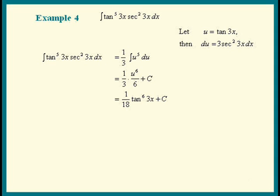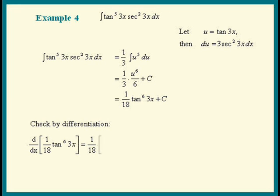Let's check by differentiation. The power rule for differentiation says, pull down the power, subtract 1 from the power, then differentiate whatever is raised to the power. In this case that's tangent of 3x. The 6 goes into the 18. Now let's differentiate tangent 3x. The derivative of tangent anything is secant squared of that thing times the derivative of that thing.